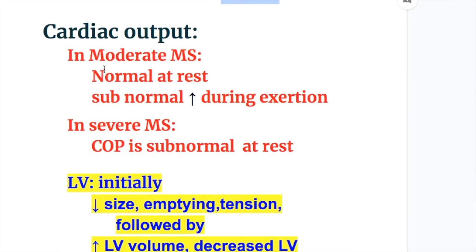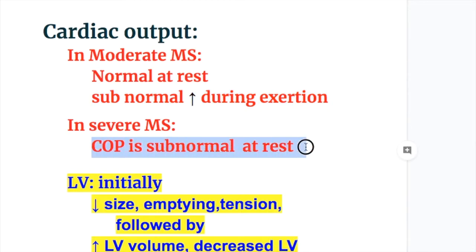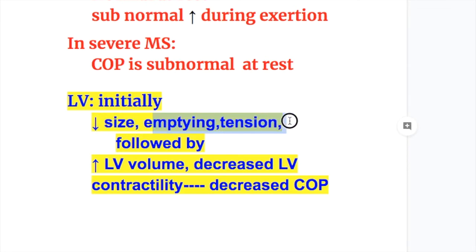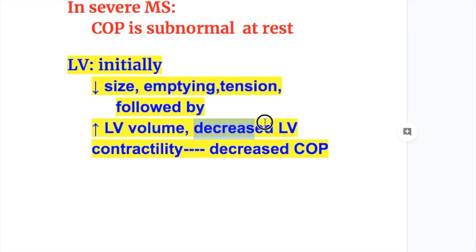Cardiac output differences: In moderate mitral stenosis, cardiac output is normal at rest but subnormal during exercise. In severe mitral stenosis, cardiac output is subnormal even at rest. In mitral regurgitation, initially there is decreased left ventricular size, decreased emptying and tension, followed by increased LV volume, decreased left ventricular contractility, and dilatation, leading to decreased output.